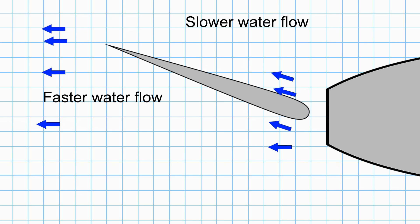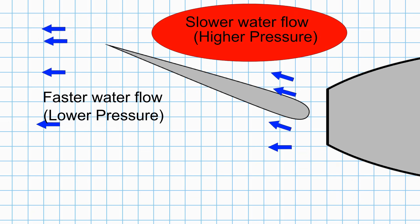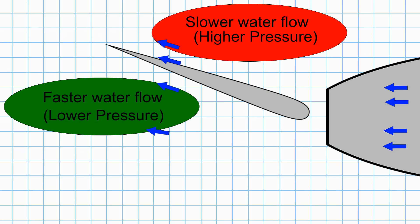This speed variation adds to the pressure difference generated by deflection alone that we saw before. This side is actually higher pressure than it was for the flat rudder. Likewise, this side is even lower pressure than it was before.